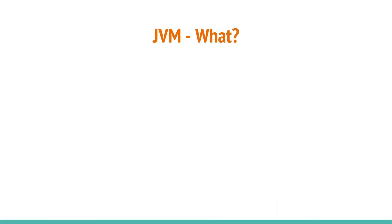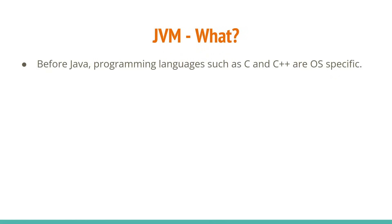JVM stands for Java Virtual Machine. Before Java, there were other programming languages such as C and C++, and these languages were operating-system specific. For example, if a team of four developers each had different laptops — one with Windows, one with macOS, one with Ubuntu, one with Red Hat Linux — a program written in C on Windows could not directly run on macOS or Linux.